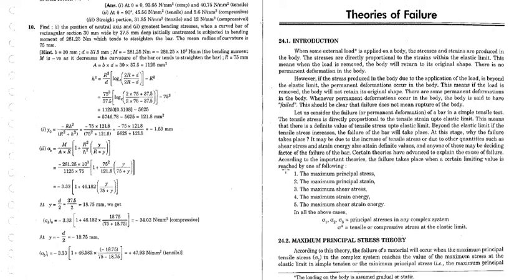We have grouped all the causes of failure into five major categories: first, maximum principal stress; second, maximum principal strain; third, maximum shear stress; fourth, maximum strain energy; and fifth, maximum shear strain energy. We had discussed principal stress, strain, shear, and strain energy in our previous videos, so now we will see how these affect the failure property of any material.